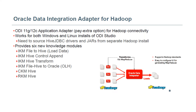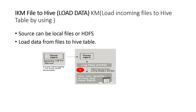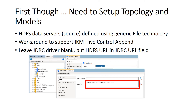Once data is in ODI, it can be loaded into an Oracle database or any other database using these IKMs. Now let's talk about how to integrate files into Hive tables using the IKM File to Hive Data Load, which loads incoming files to a Hive table. The source can be local files or HDFS files. Before going to the mapping level, we first need to bring the tables or files into an ODI model.